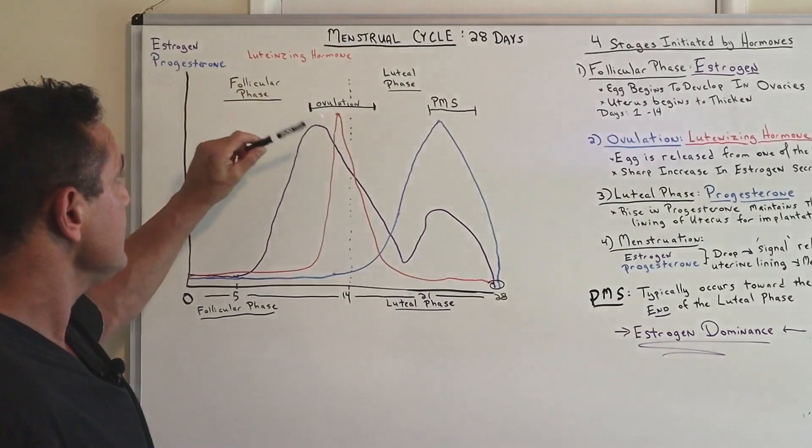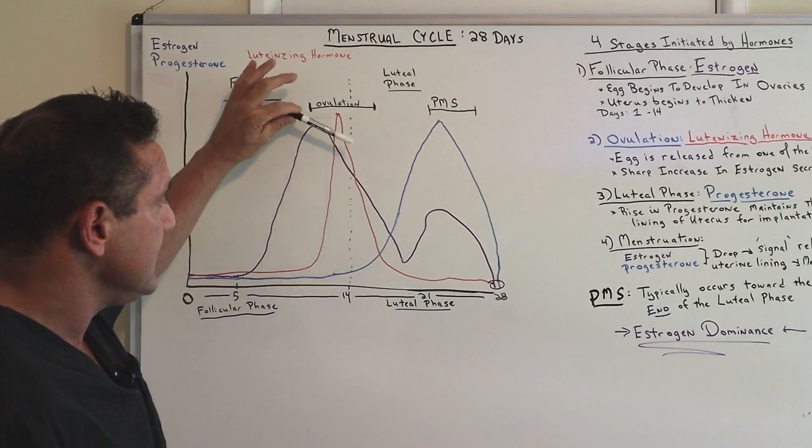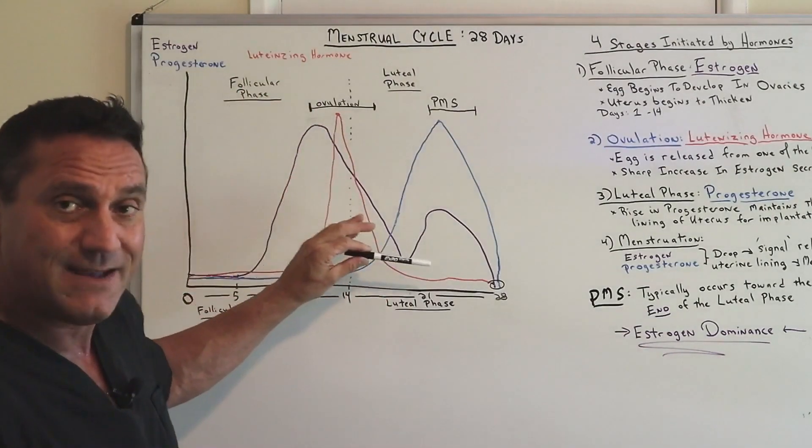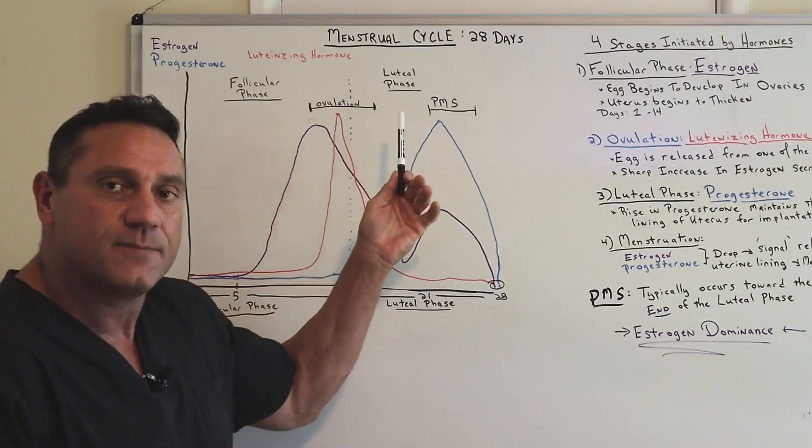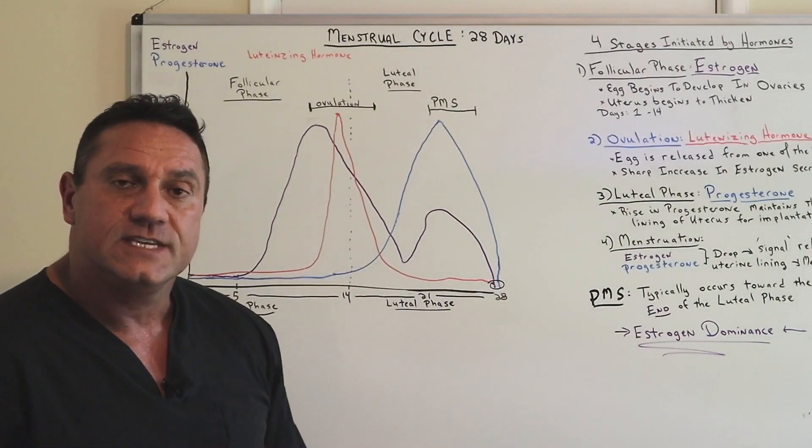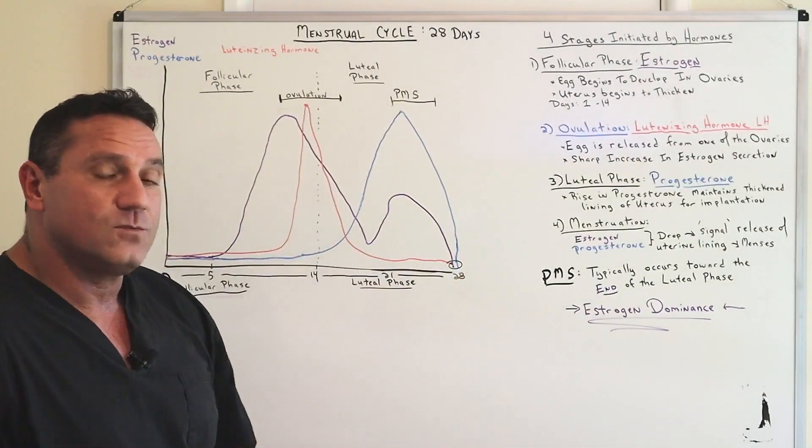So then you can see here, the first phase is follicular phase, estrogen dominance. Then you have ovulation and look at how the dip of estrogen just declines rapidly, but now you have a sharp increase in progesterone. And this is called the luteal phase.